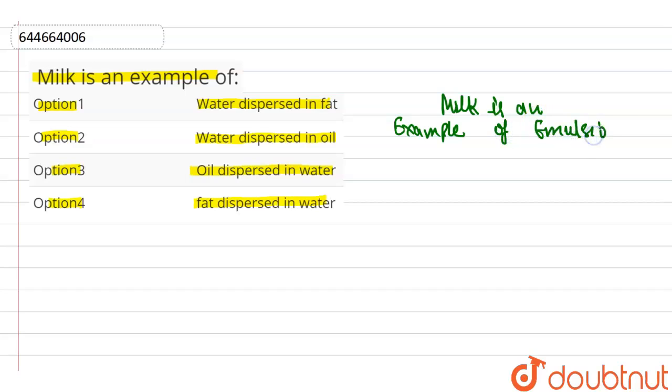Emulsion is a liquid type of colloidal solution.